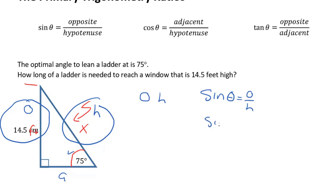So sine of angle theta is going to equal opposite over hypotenuse. Plugging in what we know, we get sine of 75 degrees is going to equal opposite, which is 14.5, over x, the length of the ladder.